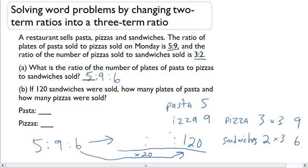So now I'm going to multiply each of my terms by 20. 5 times 20, 100. 9 times 20, 180.